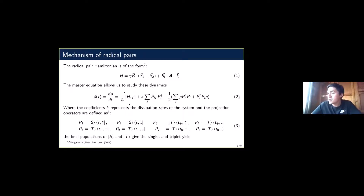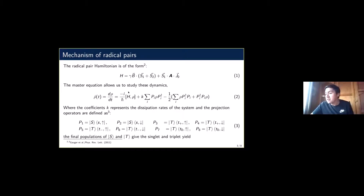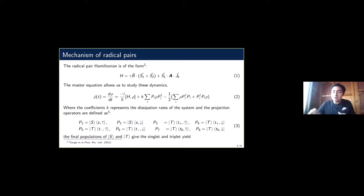To describe the system I use the master equation in the Lindblad form, shown in equation two. The first term is just the standard Hamiltonian evolution. I use the density matrix formalism, which is a more general way to describe quantum states. The density matrix row represents the quantum state I am working with. The second part represents the noise of the system, since the system is interacting with the magnetic field of the Earth and other environmental factors.